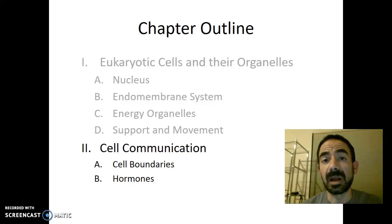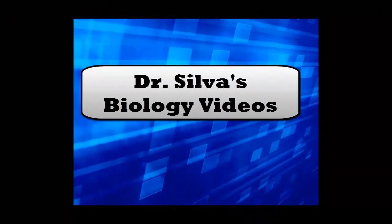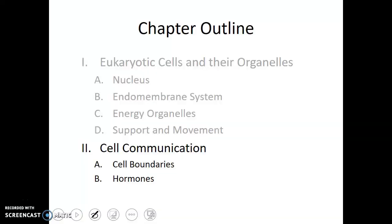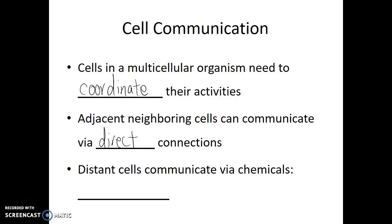Now that we've learned a bit about the structures of eukaryotic cells, let's talk about how they communicate with their adjacent and distant cellular neighbors. Cells in a multicellular organism need to coordinate their activities. In order for the cells to function properly and for that organism to do all the activities it needs to do, adjacent neighboring cells can communicate via direct connections, whereas distant cells communicate via chemicals called hormones.